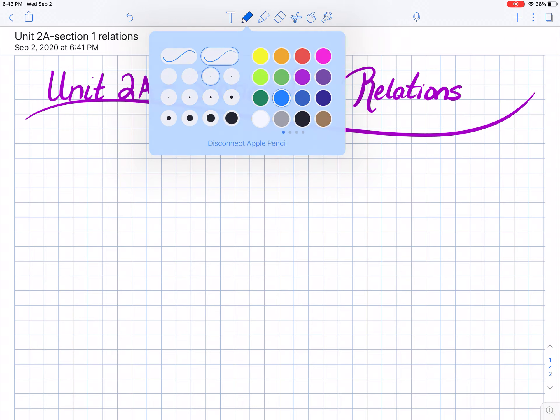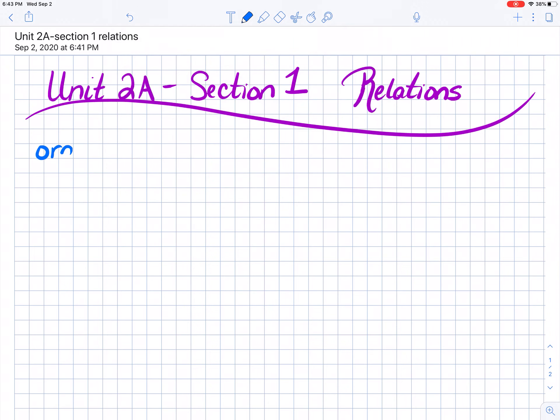The first thing is ordered pairs. Ordered pairs can simply be written as an X and then a Y. So 1, 2, that's an ordered pair, negative 2, 4 is an ordered pair, and 0, 3. That's a type of relation.